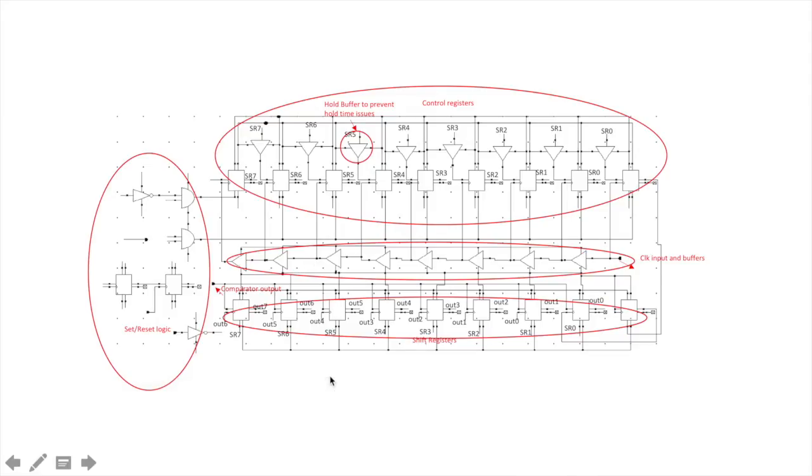The SAR operation is based on binary search algorithm. The SAR logic takes in 10 clock cycles that is 8 bits and 2 extra cycles to generate one output. Hence, if the sampling rate is 200 kilohertz, 2 megahertz of clock is required for the SAR operation. In this logic, the bits are represented by the registers D7 to D0.